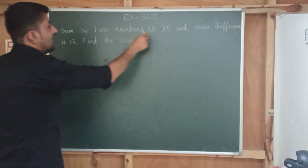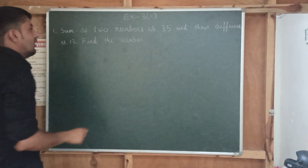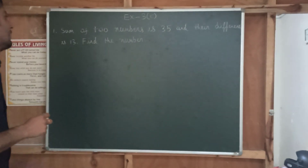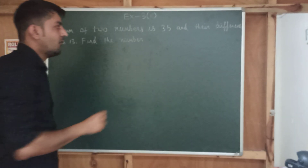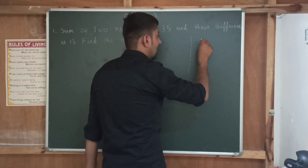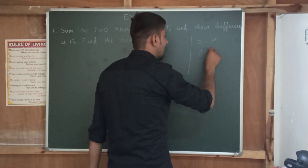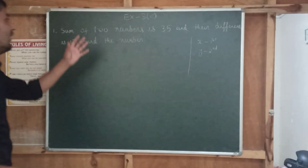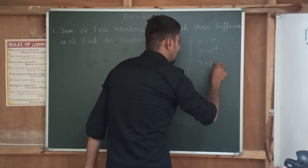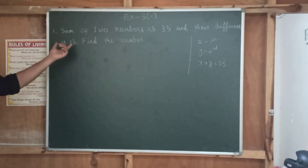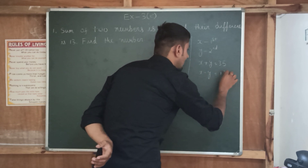The sum of two numbers is 35 and their difference is 30. You have to find out the two numbers. The sum is given to be 35 and their difference is given to be 30. So X plus Y will be 35, and X minus Y will be 30.